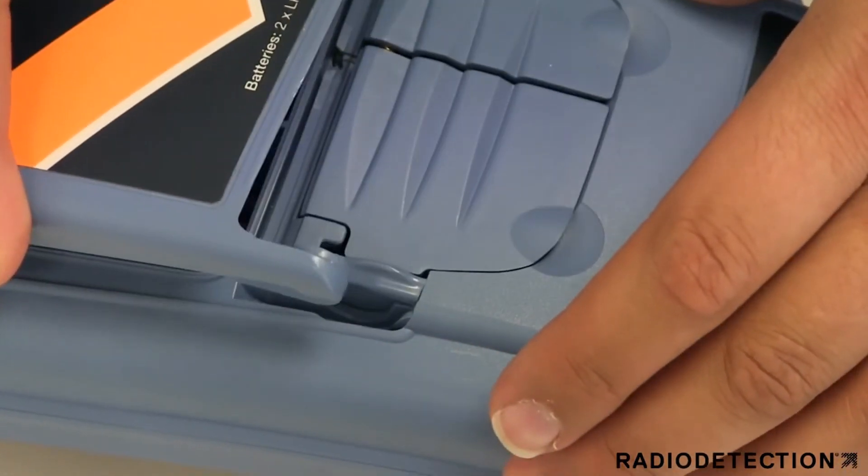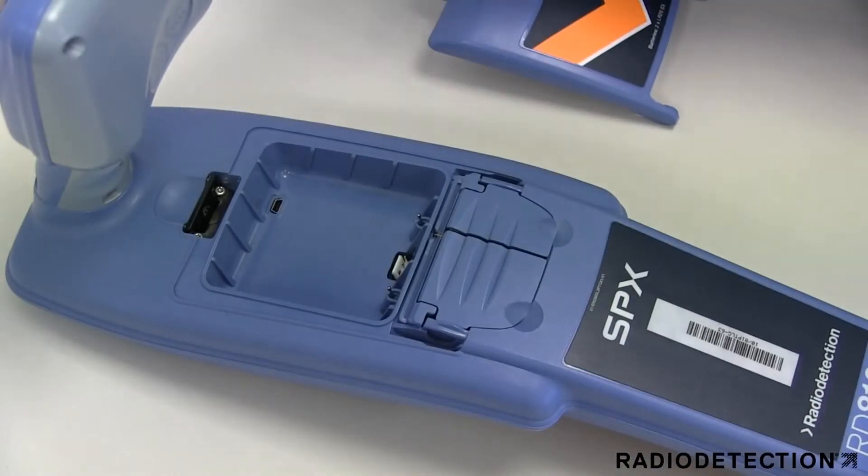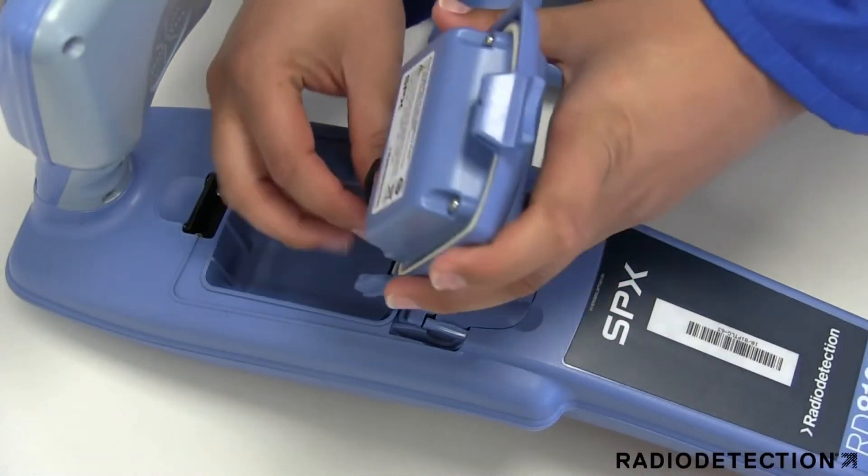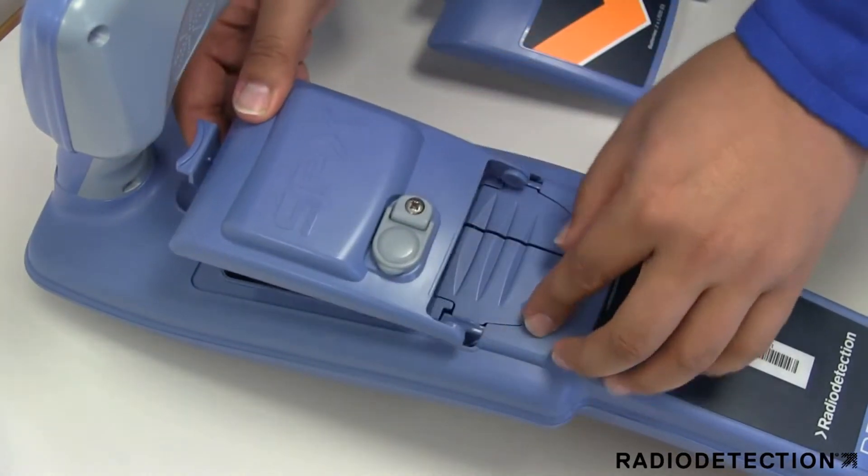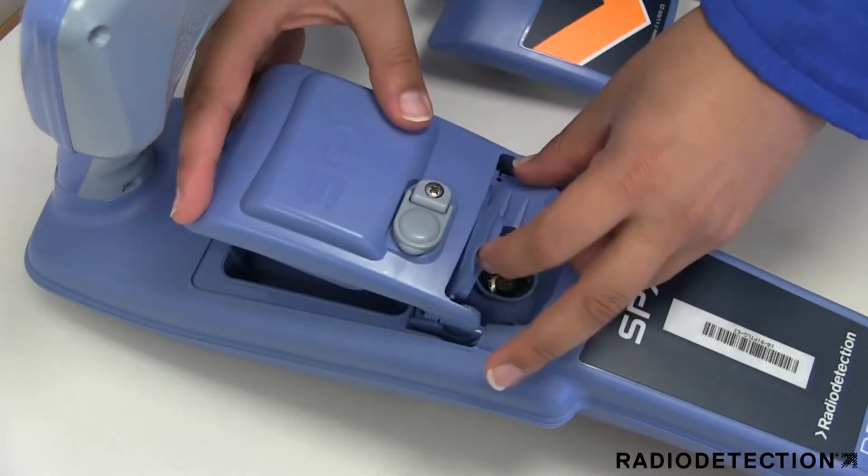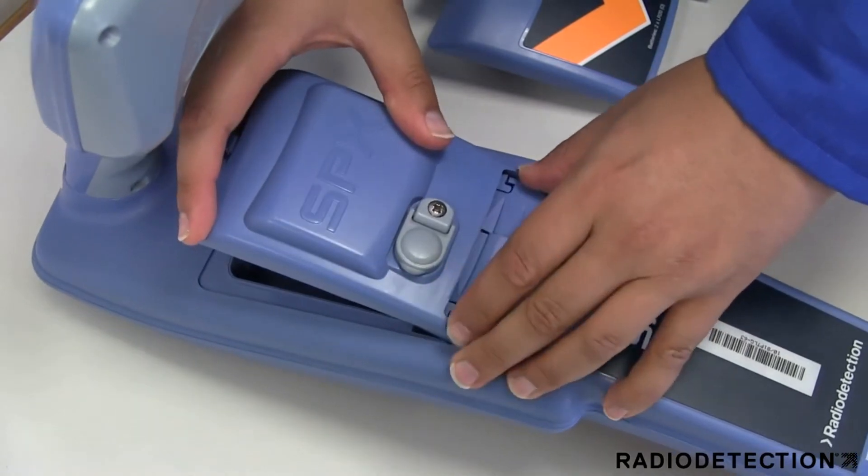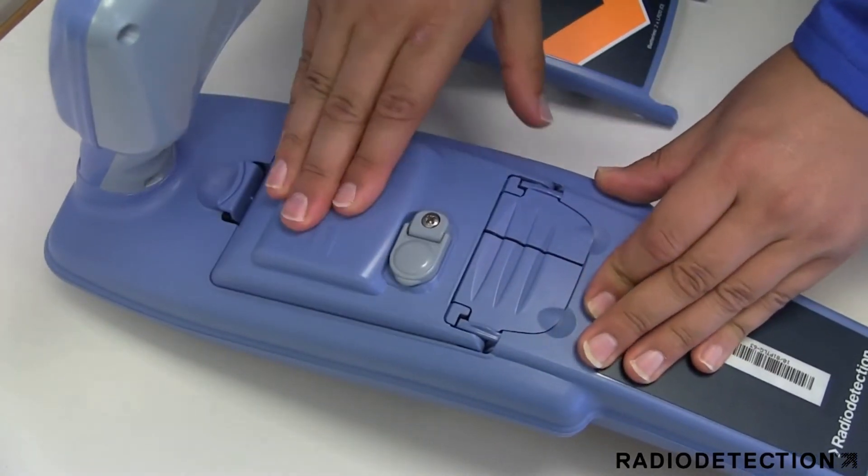To fit the new rechargeable battery pack, plug the lead into the battery connector. Lift both accessory covers slightly, then gently push the replacement pack into place until it clicks on both sides, then close the battery pack.